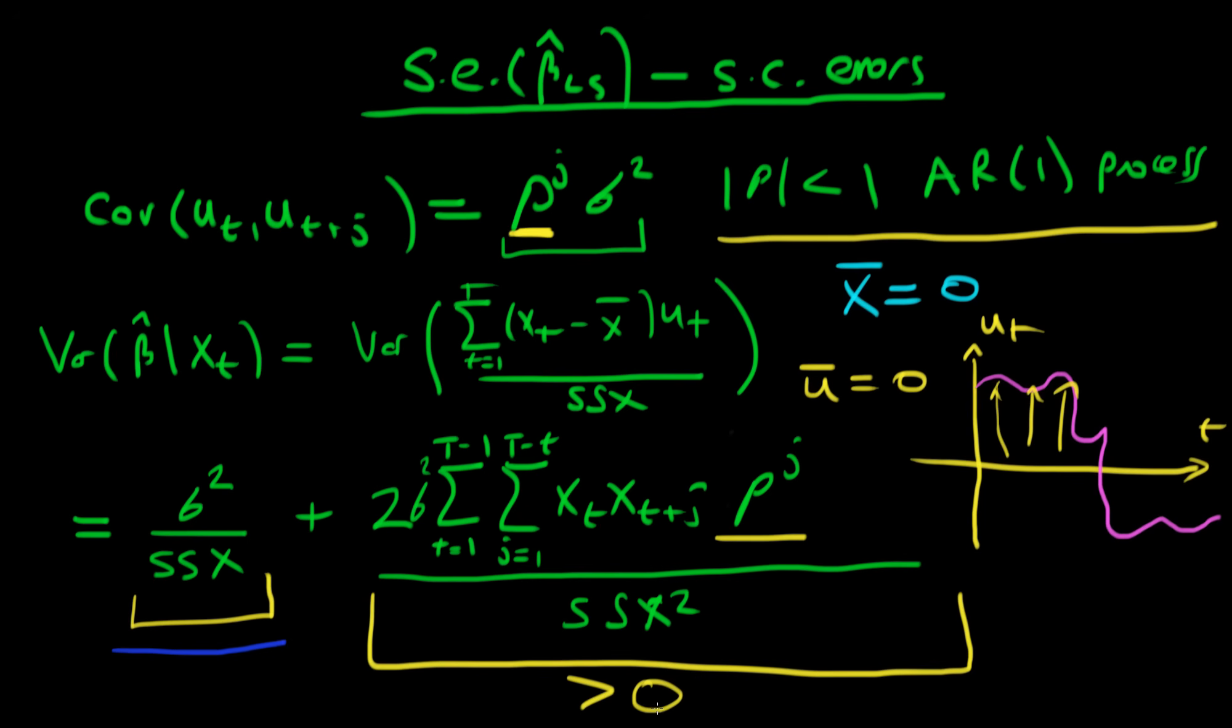With going with the original standard error, because of the fact that essentially that would make us think that our estimates of beta hat were that much more precise than they actually were. So that might actually lead us to conclude that a variable was statistically significant when in fact it wasn't. So that's the real problem with using this serial correlation non-robust standard errors opposed to using the robust one which contains this term on the right here.